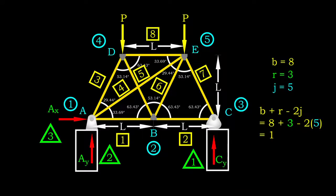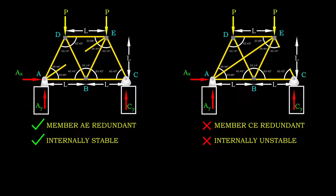The degree of indeterminacy is 1, and therefore, we need to make a truss member redundant. The selection of redundant member needs to ensure the resultant primary structure is stable after removing the redundant member. For this reason, it is possible to choose member AE as redundant, but not CE.